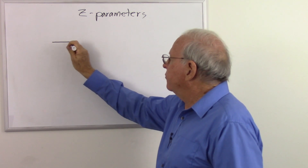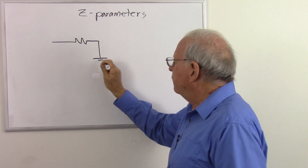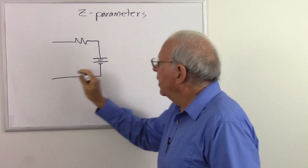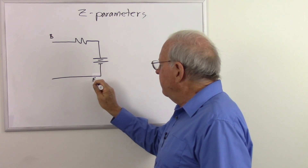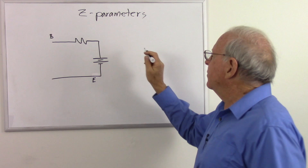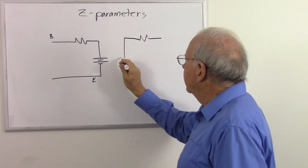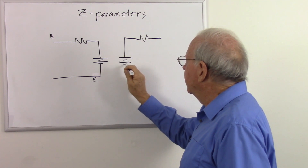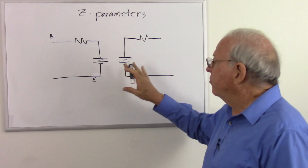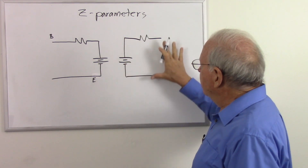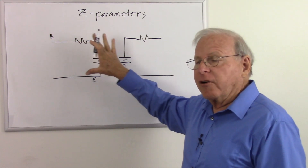We start with our base circuit, which is going to have a resistor in series with a voltage source. So this is the base of the transistor here, and here is the emitter. Here is another similar circuit which represents the collector circuit. Now this should look pretty familiar — these Z-parameters are based on Thevenin's theorem, so this is what we usually see for Thevenin's theorem on the output of a circuit.